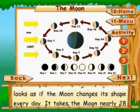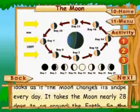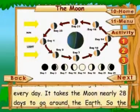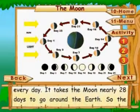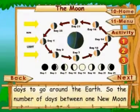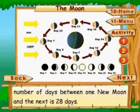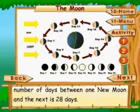It takes the moon nearly 28 days to go around the earth, so the number of days between one new moon and the next is 28 days.